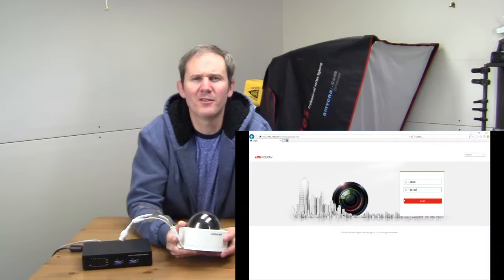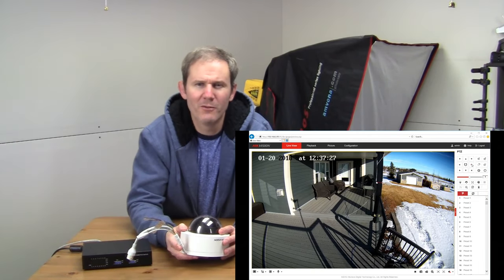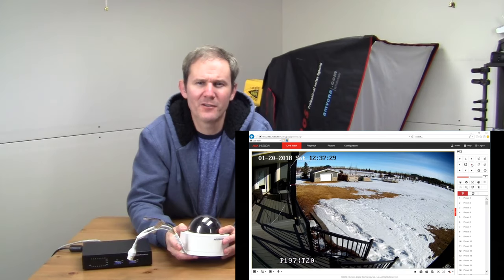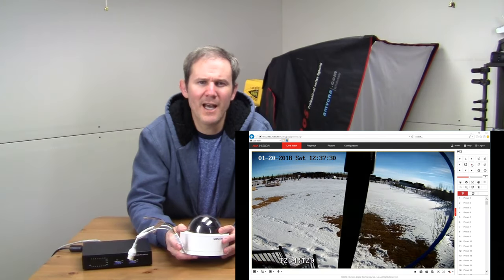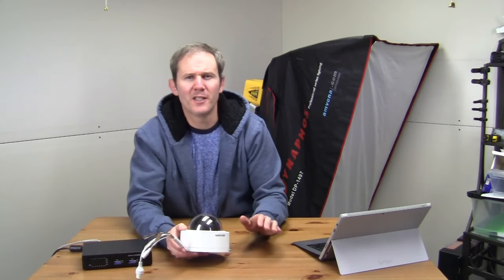To control the PTZ camera, I'll log into the camera's web interface using Internet Explorer and use the control panel, which is located on the right hand of the screen on the live view tab. The footage will be recorded at 15 frames per second using Blue Iris.